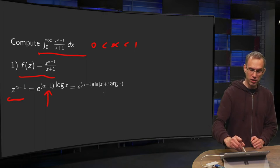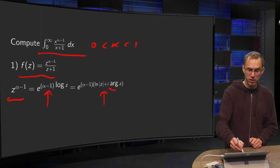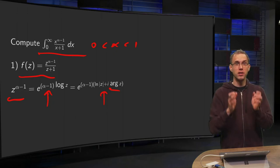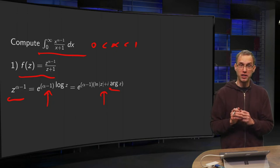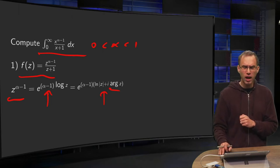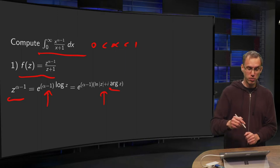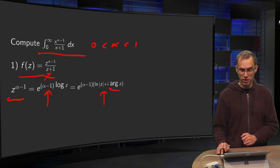And log z is defined in the usual way as the ln of the modulus of z plus i times the argument of z, where we still have to choose the argument. So there we have our f of z. Now we have to think a bit carefully about how we choose the contour. We need to put a branch cut somewhere and we have a problem at z equals minus 1.